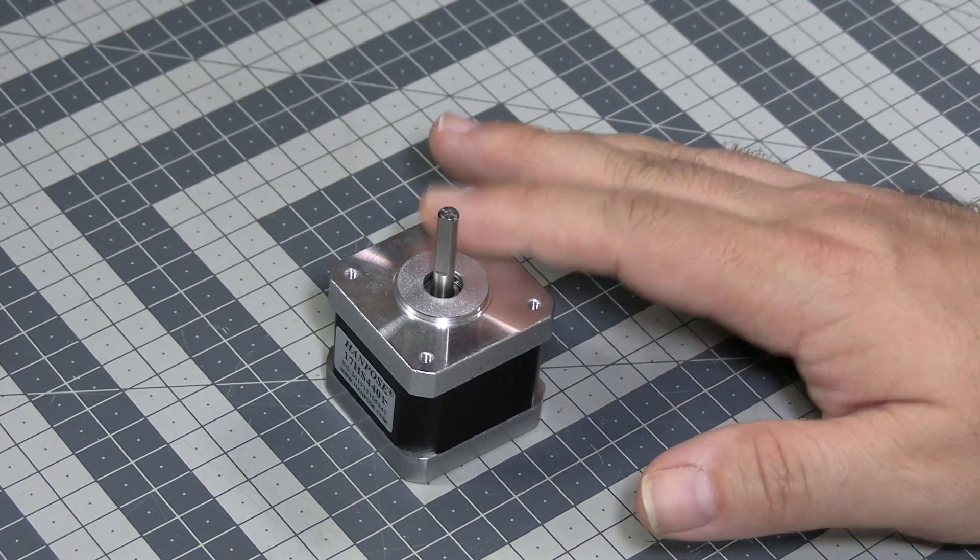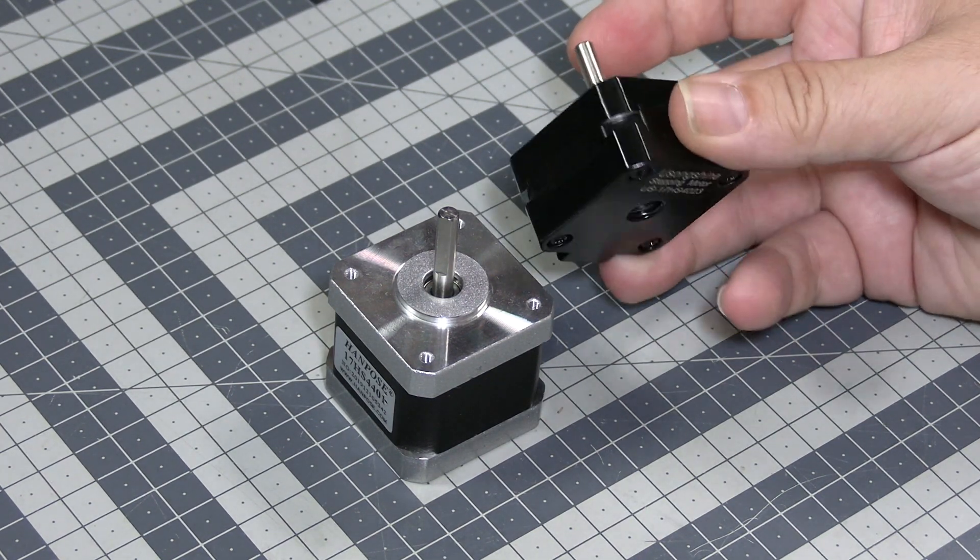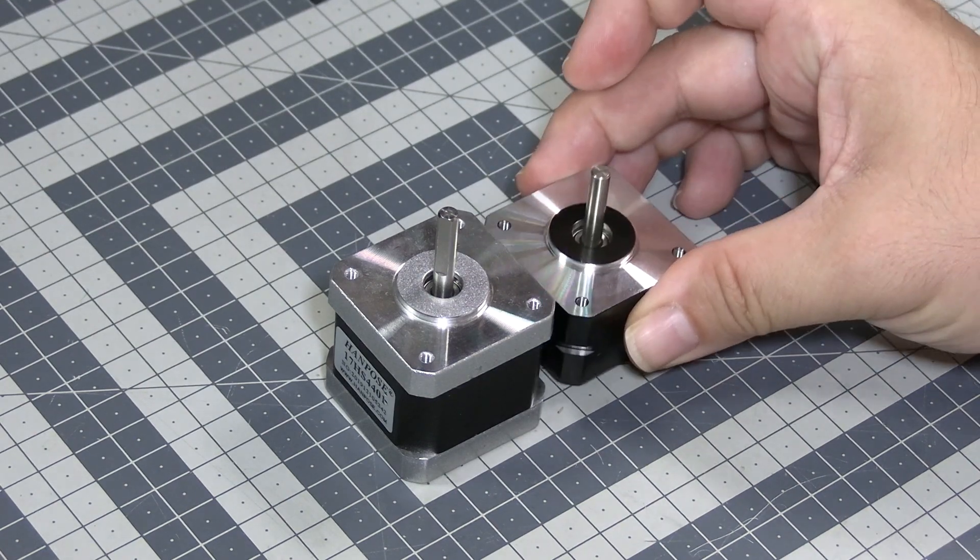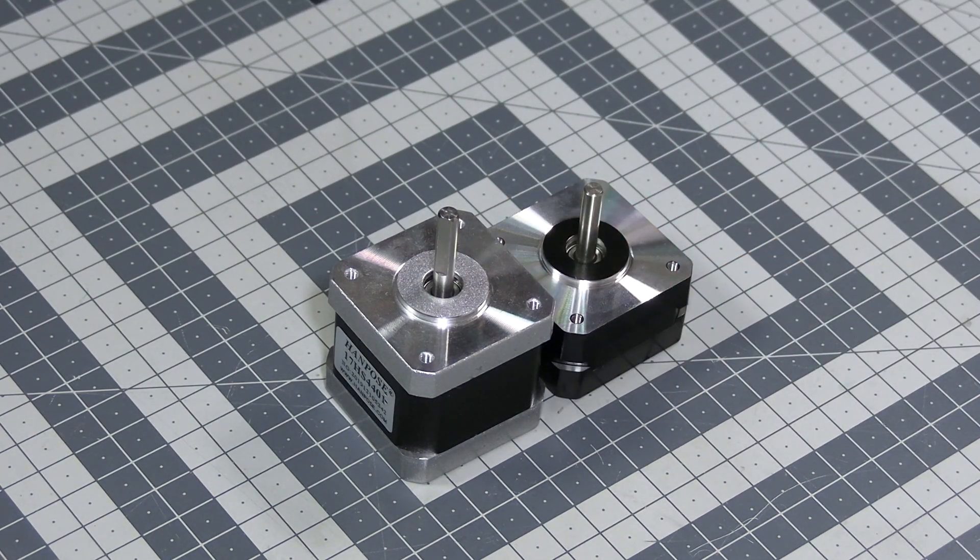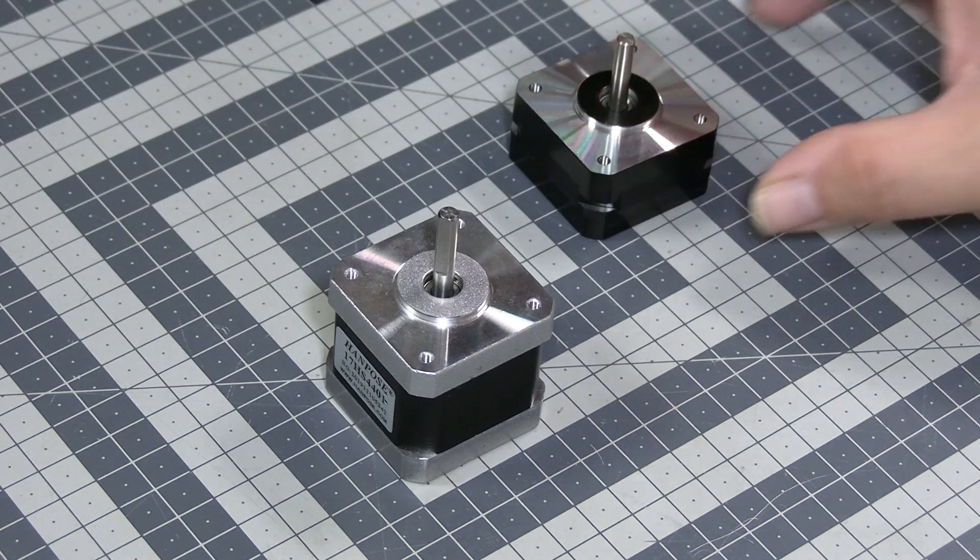This is the NEMA 17. For hobby grade it's usually kind of biggish, for industrial standard it's kind of smallish. But if you want something simpler, you can have half-size NEMA 17, right? Half of the size, probably half of the torque.